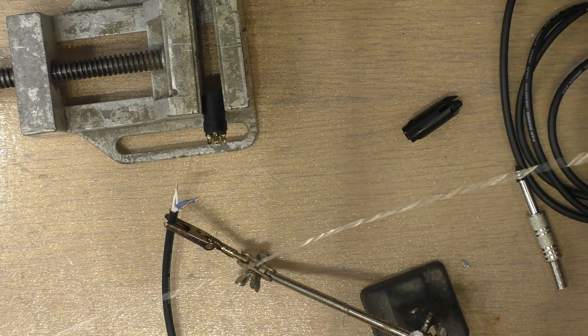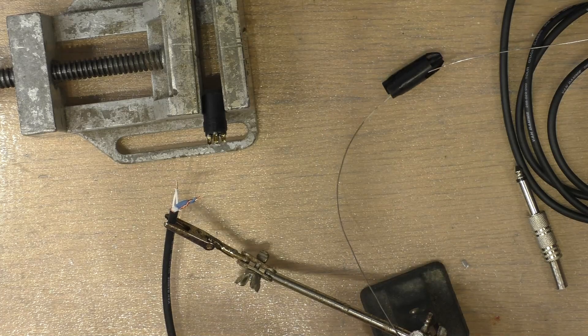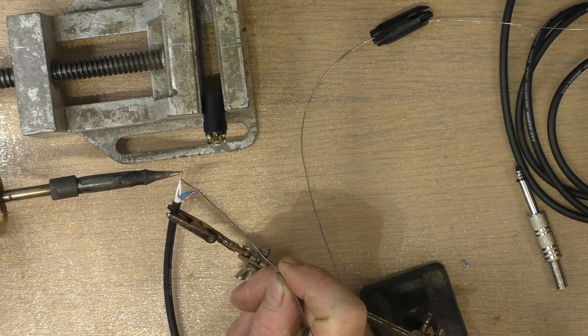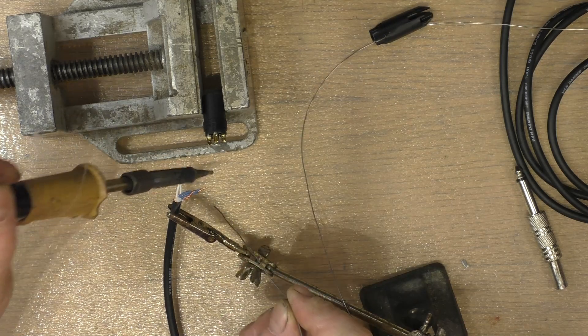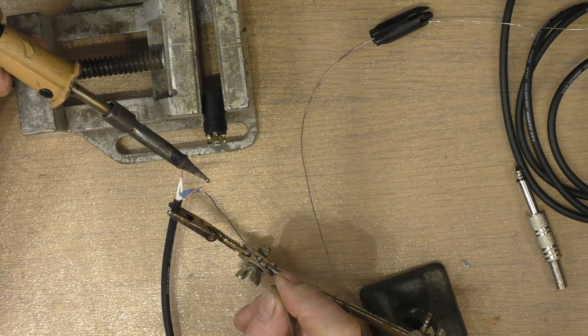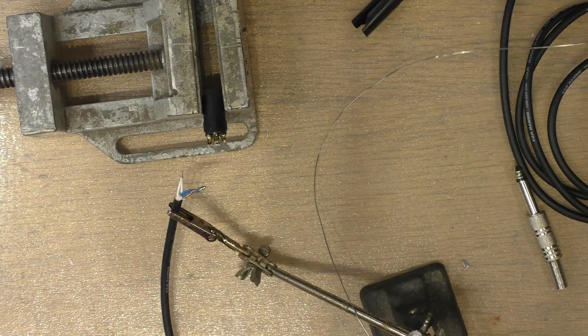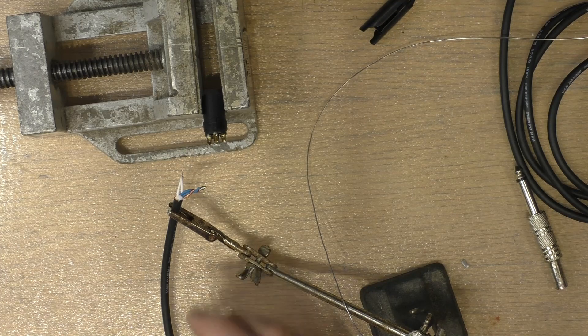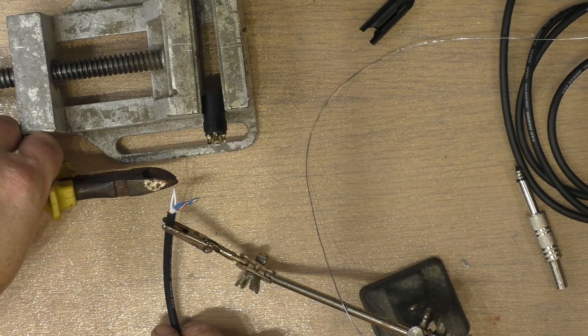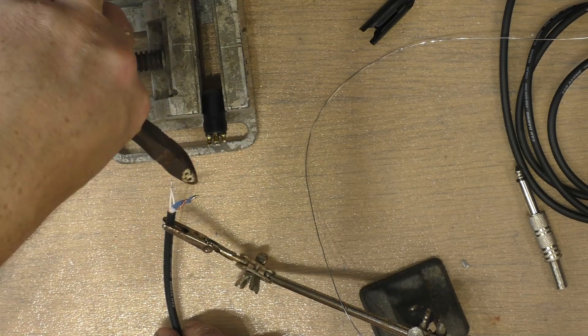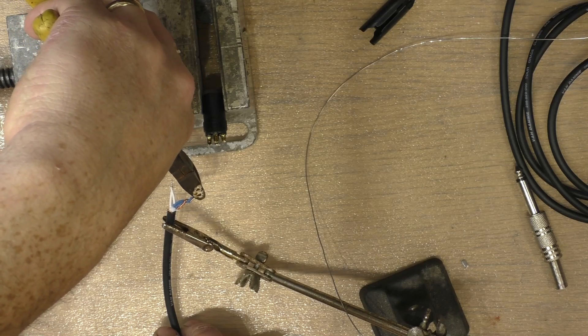We're going to put the two of those together. I'm just clamping it here now so you can see what's going on, my hands won't be in the way. Just clean the tip of the iron. We're going to put the iron in there and we're going to tin those like that. Just kind of snip off the excess, you can leave them fairly short.